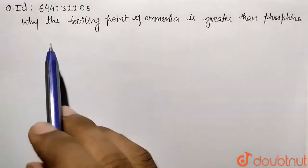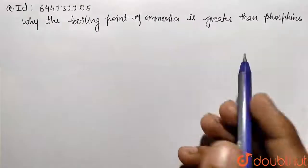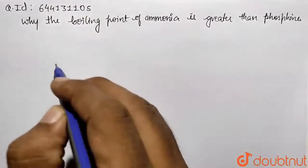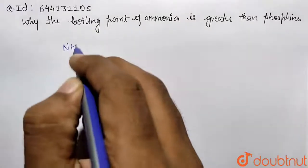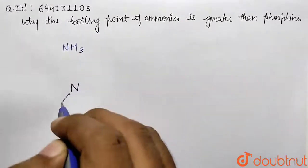We are asked about why the boiling point of ammonia is greater than phosphine. So basically they are talking about ammonia. Let's take ammonia. Ammonia is represented by NH3 molecule, so there are three hydrogen bonds.